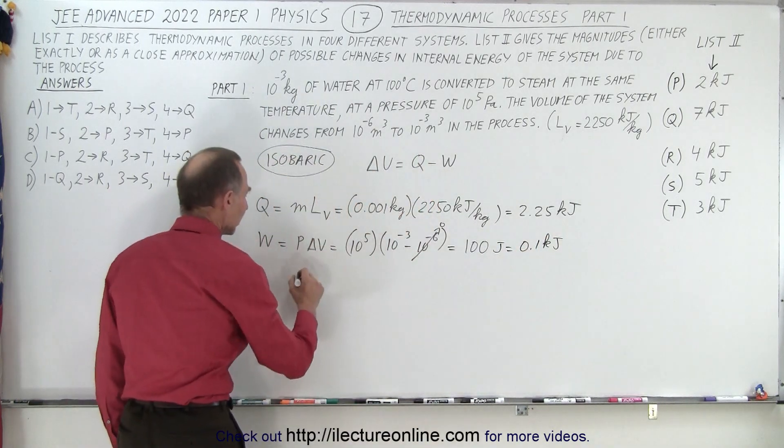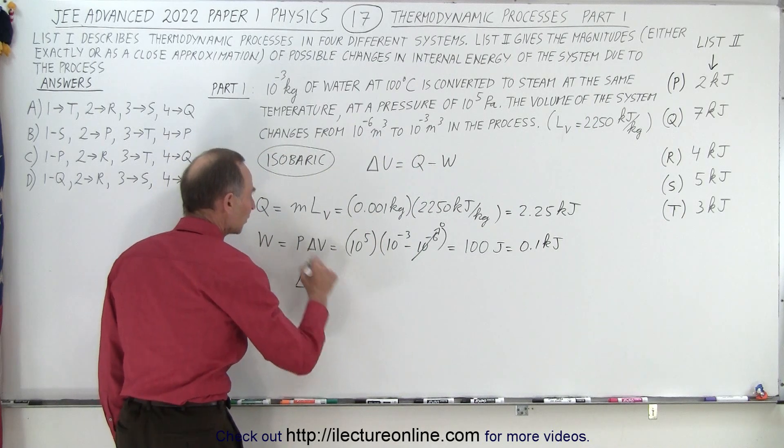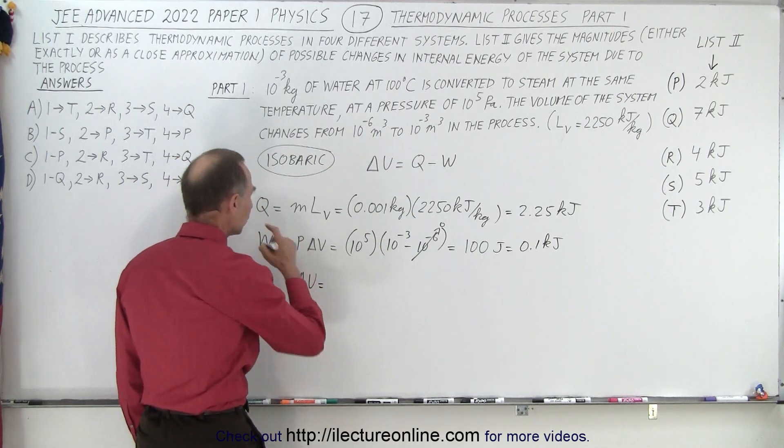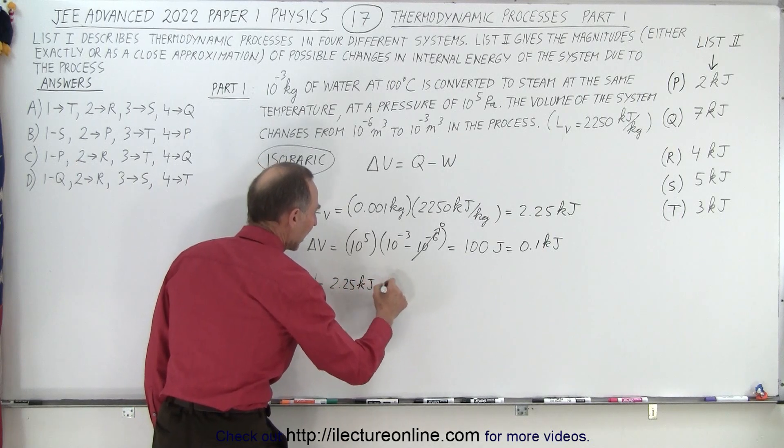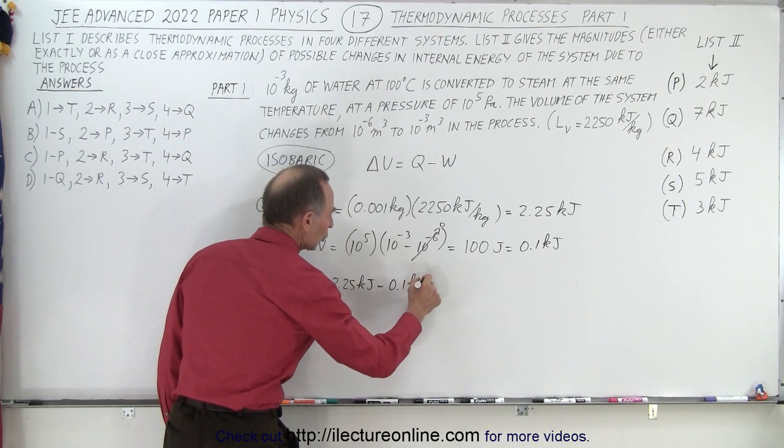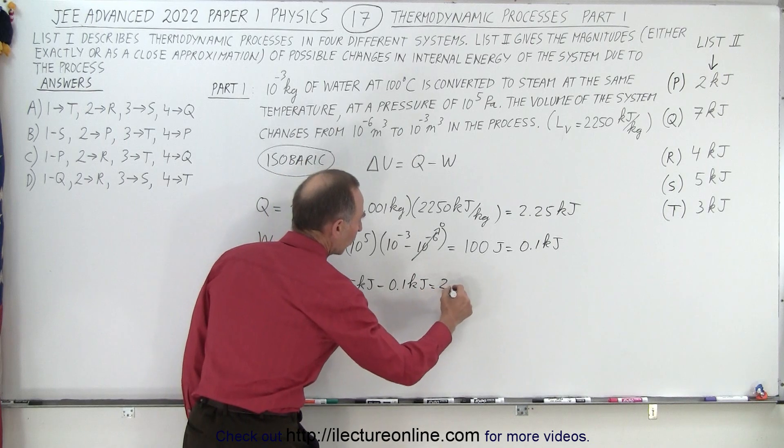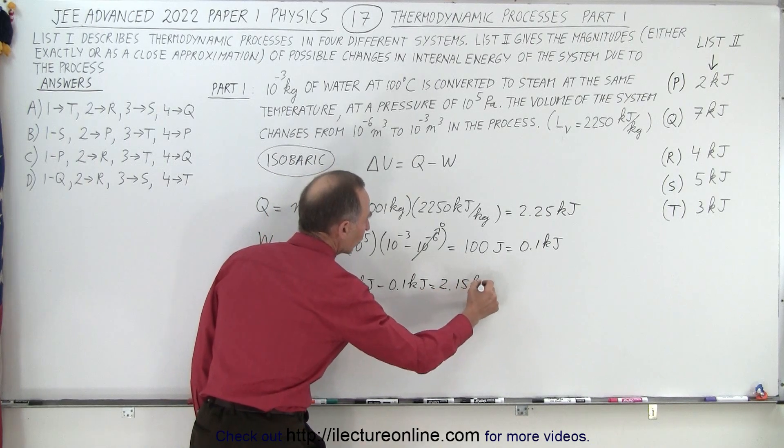Finally, we can say that the change in internal energy of this particular system is Q, the heat added, which is 2.25 kilojoules, minus 0.1 kilojoule, which is 2.15 kilojoules.